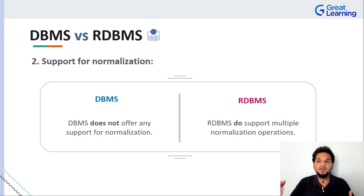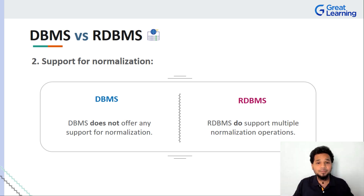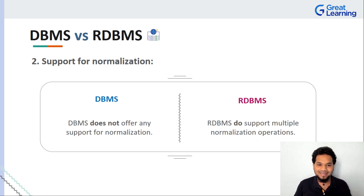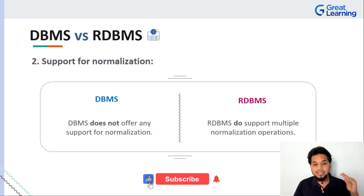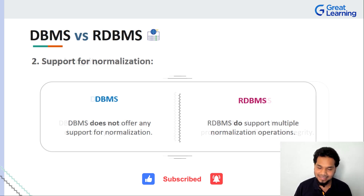Normalization is basically an operation of how you would efficiently group and bring data together in a way where it is not only more readable but also efficient to store. There are multiple normal forms — 1NF (first normal form), 2NF (second normal form), 3NF (third normal form), and Boyce-Codd normal form. So if you're working on a DBMS, understand that it does not offer any support for normalization, while a relational database does — a huge difference.